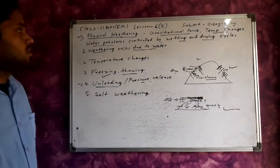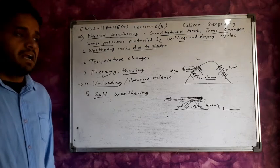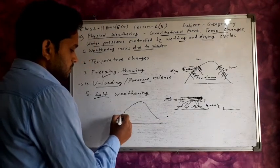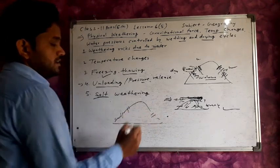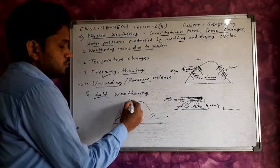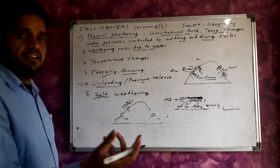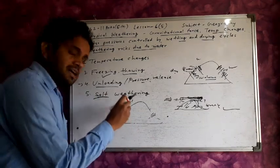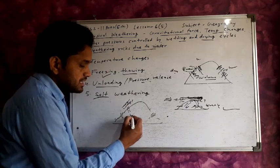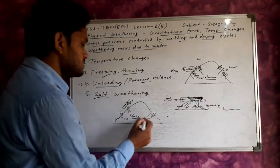Next is salt weathering. Rocks have small cracks, and rainwater mixed with soil enters these cracks. After the water dries out, salt is left behind inside the cracks. As the salt dries, its volume increases and the rocks start to break. This type of weathering is known as salt weathering.